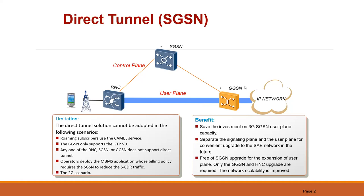Limitations of direct tunneling: roaming subscribers do not use DT; if the GGSN supports GTP v0 it's not done; if any of the three NEs — RNC, SGSN, and GGSN — do not support the DT function, it's not done. There are also some complications in billing. The advantages and benefits are improved scalability, and it forms the basis of 4G architecture.